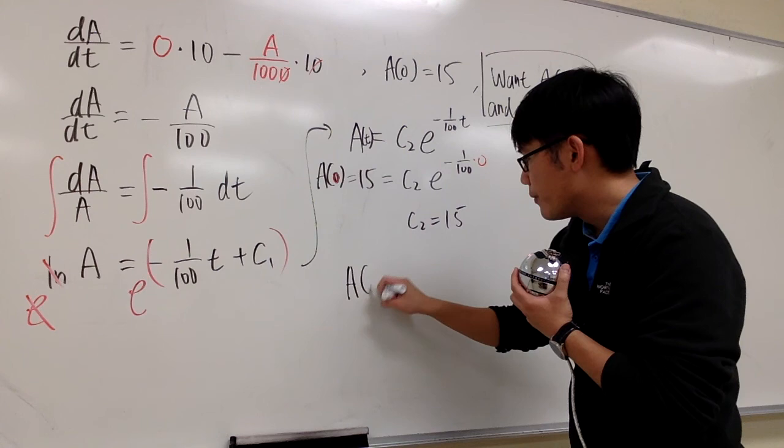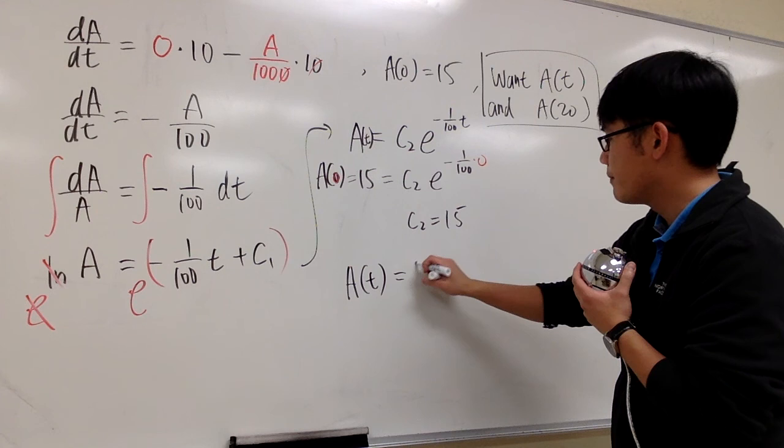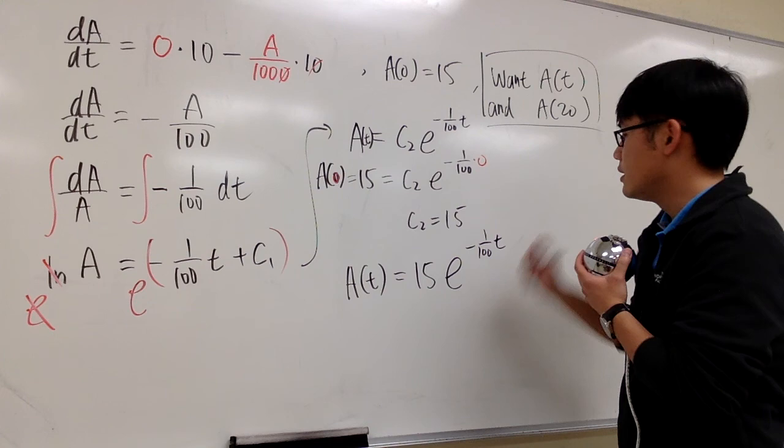So, we know the amount of the salt in the tank, A of T, will be 15 times that, e to the negative 1 over 100 T. So, that's the first part. And of course, you can use decimal right here, doesn't really matter.